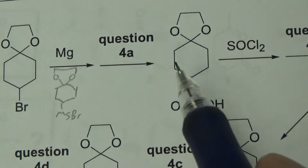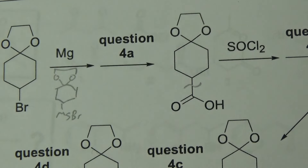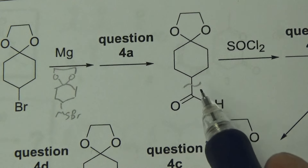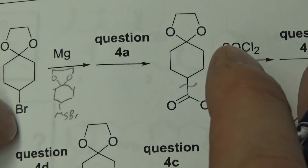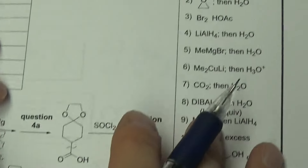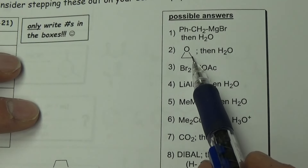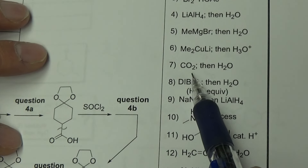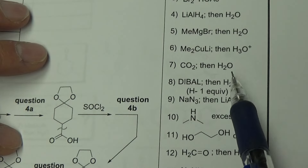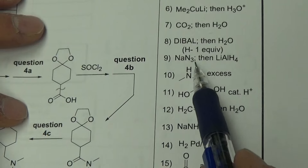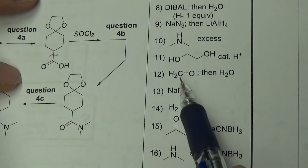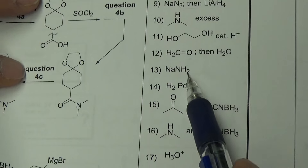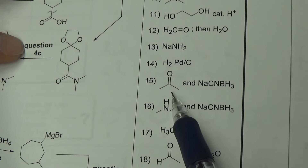What's the thing we're attaching? We're attaching a one-carbon building block, so whatever we're attacking — because Grignards attack things — it's got to be one carbon. There's only one one-carbon building block that gives you a carboxylic acid. If we hunt up and down the list, we can look for things Grignards attack: an epoxide — that's two carbons and it would make an alcohol. CO2 might be a good option because that does give a carboxylic acid — answer number seven.